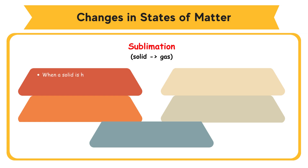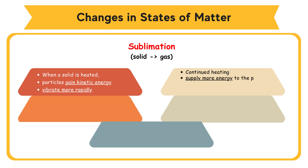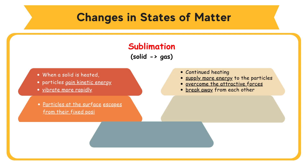Sublimation. When a solid is heated, the particles gain kinetic energy and vibrate more rapidly. Continued heating will supply more energy to the particles until the particles can overcome the attractive forces between them and break away from each other. Particles at the surface escape from their fixed positions. At this point, the solid starts to change to a gas. The temperature at which a solid changes directly to a gas is called the sublimation point.